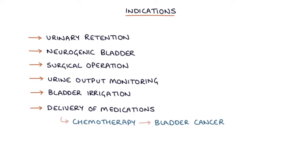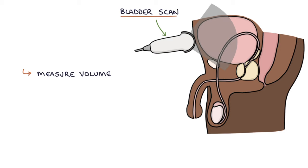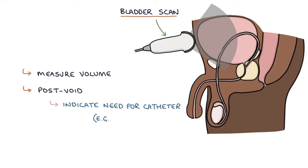A bladder scanner can be used to measure the volume of urine in the bladder. A post-void bladder scan, measured after the patient attempts to empty their bladder, can indicate the need for a catheter. For example, if they've opened their bladder as well as they can and still have more than 500 milliliters left, this is an indication for a catheter.